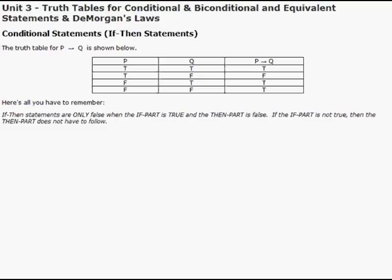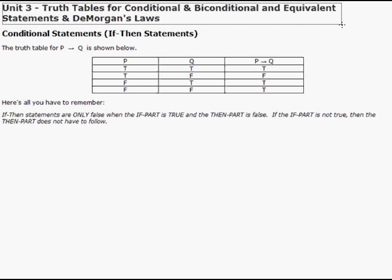In Unit 3 we are going to look at truth tables for conditional statements, also biconditional and equivalent statements and DeMorgan's Laws. First we are going to look at the conditional statements, the if-then statements. To show all the possibilities of the if-then statement, let's look at the truth table for the if-then statement.